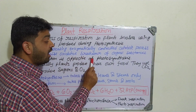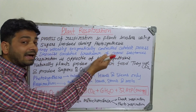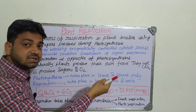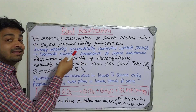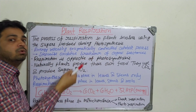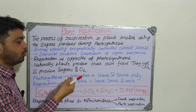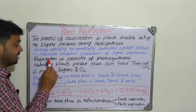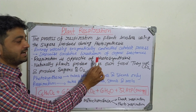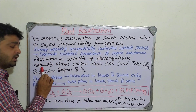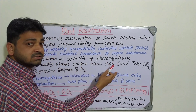Respiration is the opposite of photosynthesis. In photosynthesis, carbohydrate is manufactured by the plant leaves, whereas in respiration that carbohydrate is broken down into energy in the form of ATP. So respiration is the opposite of photosynthesis.